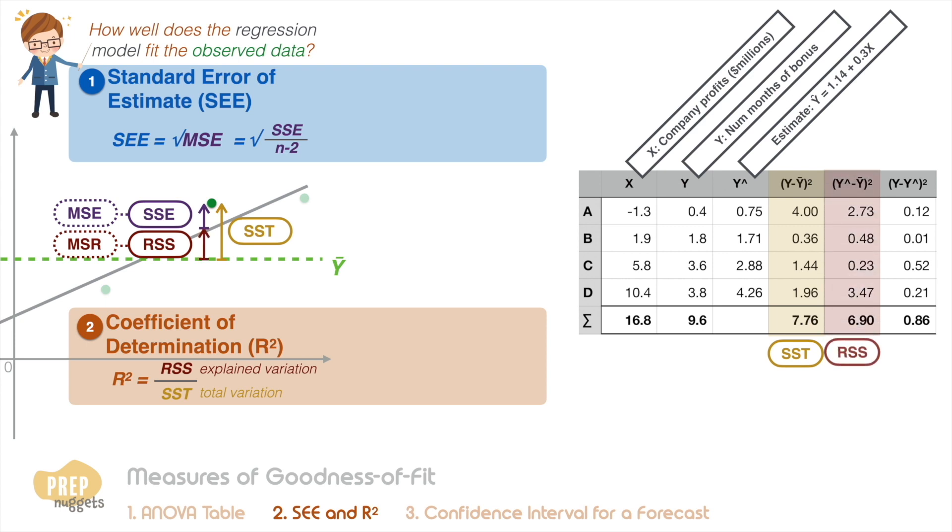The regression sum of squares is a measure of the variation from the mean that's explained by the regression model, so the RSS is 6.9. And the sum of squared errors is a measure of the unexplained variation of the observed values from the estimated value, so the SSE is 0.86.